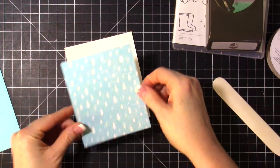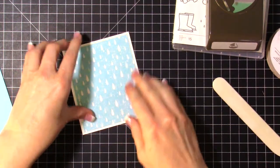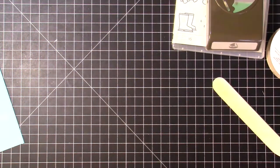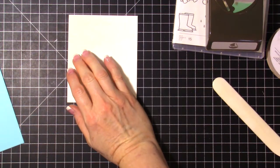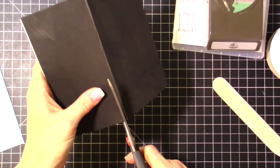I'm using this designer paper. This is the Pleased as Punch designer paper. It is only available through the end of the month. Once the end of the month comes, that paper won't be available. It coordinates with several of our punches.